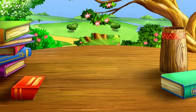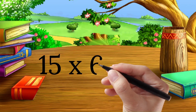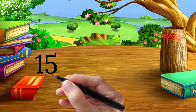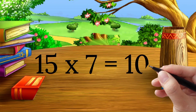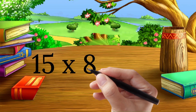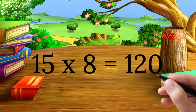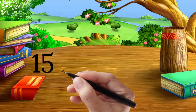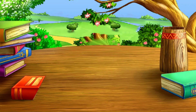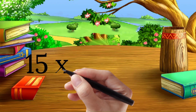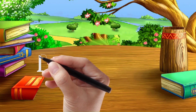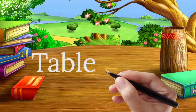Fifteen six's a ninety. Fifteen seven's a one-hundred-five. Fifteen eight's a one-hundred-twenty. Fifteen nine's a one-hundred-thirty-five. Fifteen ten's a one-hundred-fifty. Table of Sixteen.